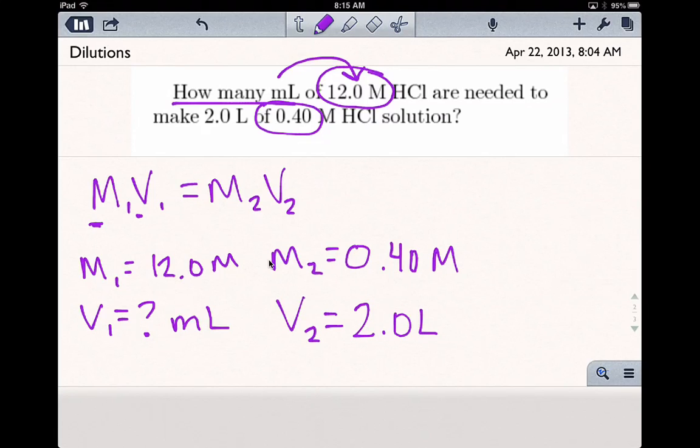If you notice, the question asks for milliliters but our final volume is given in liters, so let's make that conversion. 2 liters equals 2,000 milliliters. It doesn't matter what unit you use as long as you're consistent from start to finish.